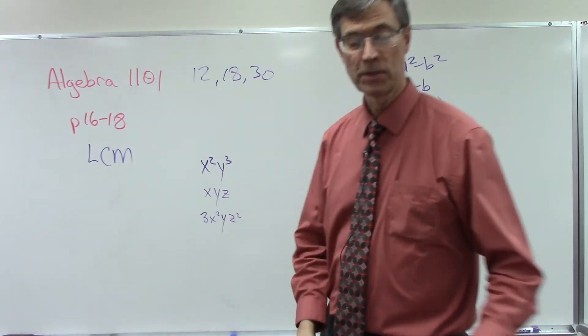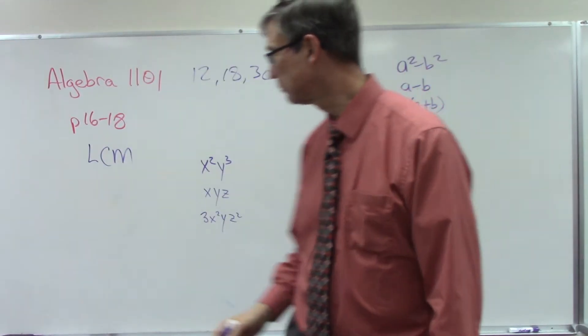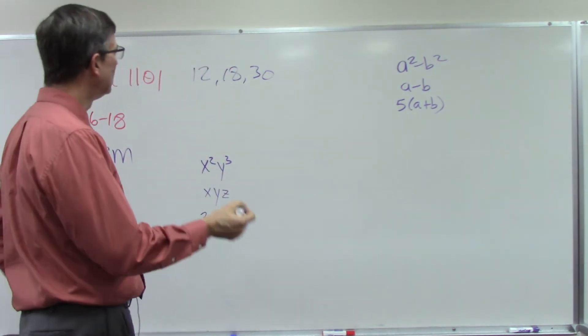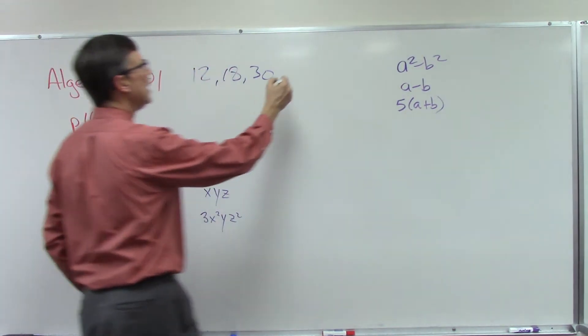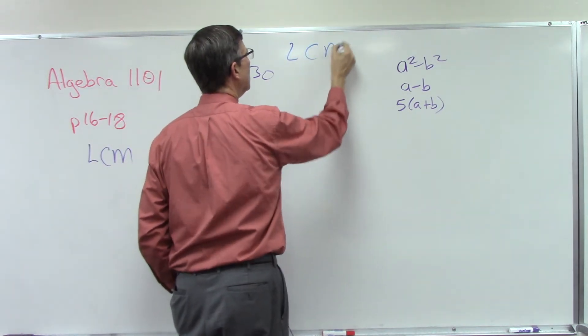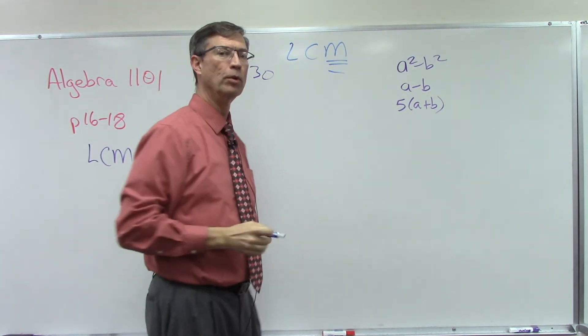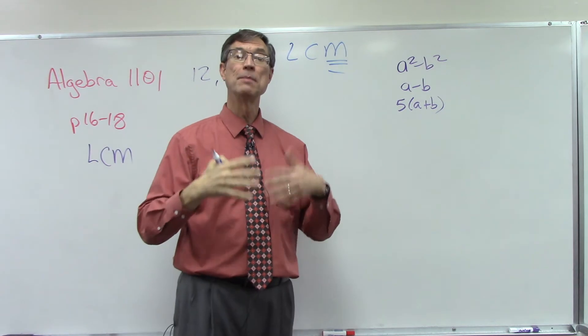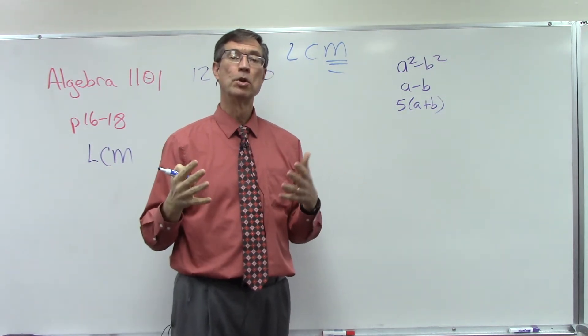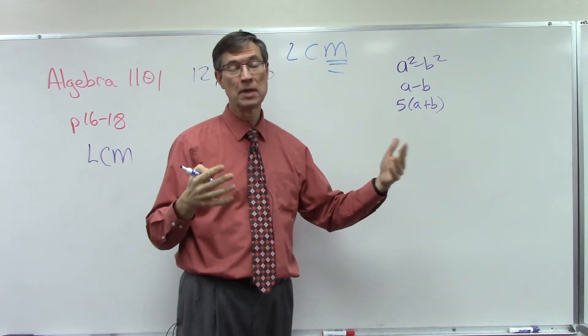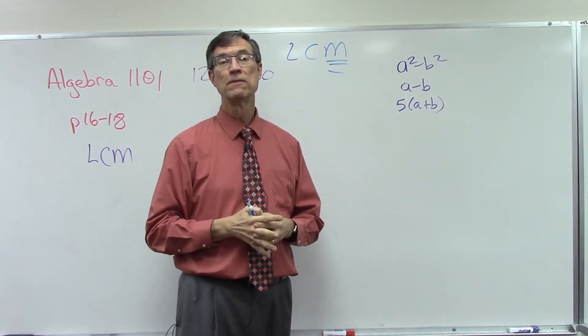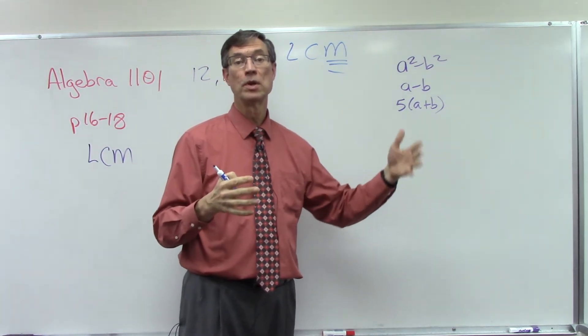Let's dive in here on pages 16 through 18. The least common multiple - LCM - start with that word multiple. Multiple means a bigger number. The multiples of 3 are 3, 6, 9, 12, 15, 18, etc. The multiples of 5 are 5, 10, 15, 20, 25.